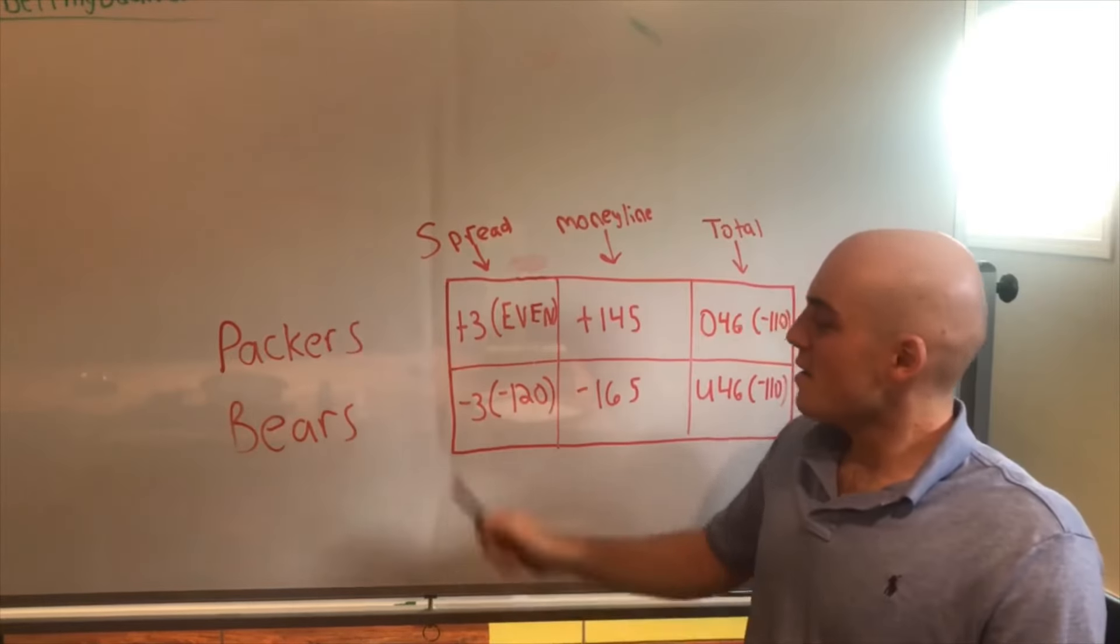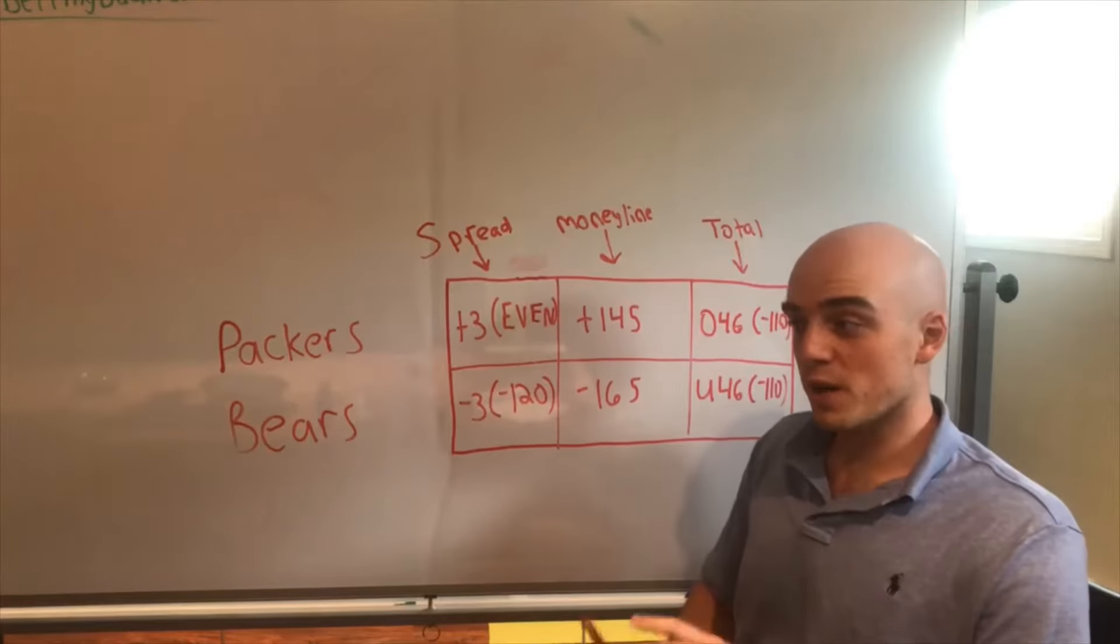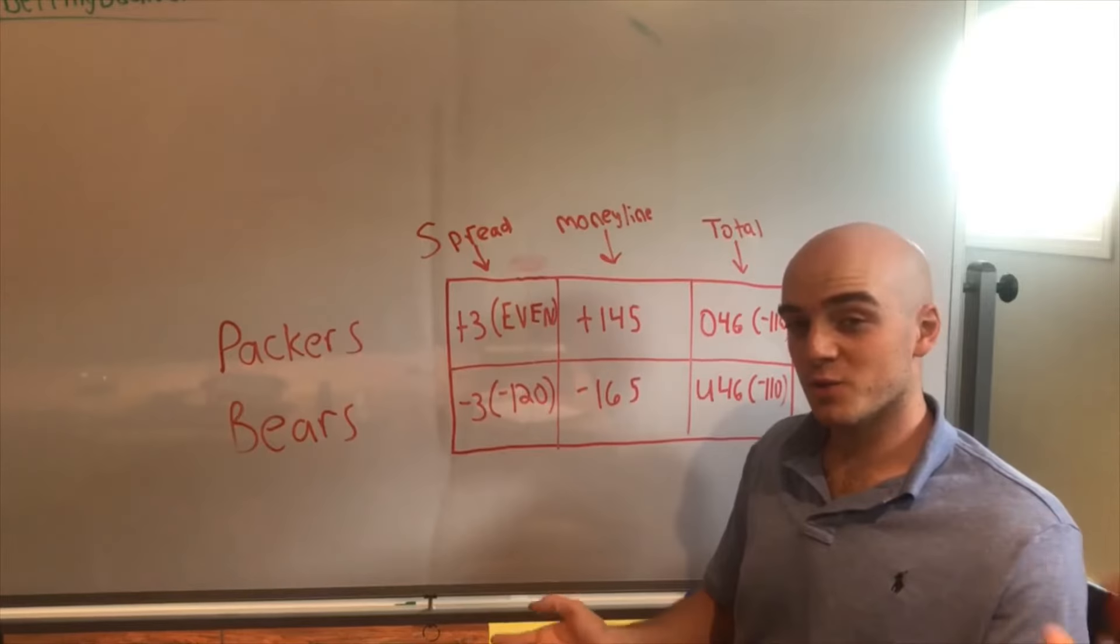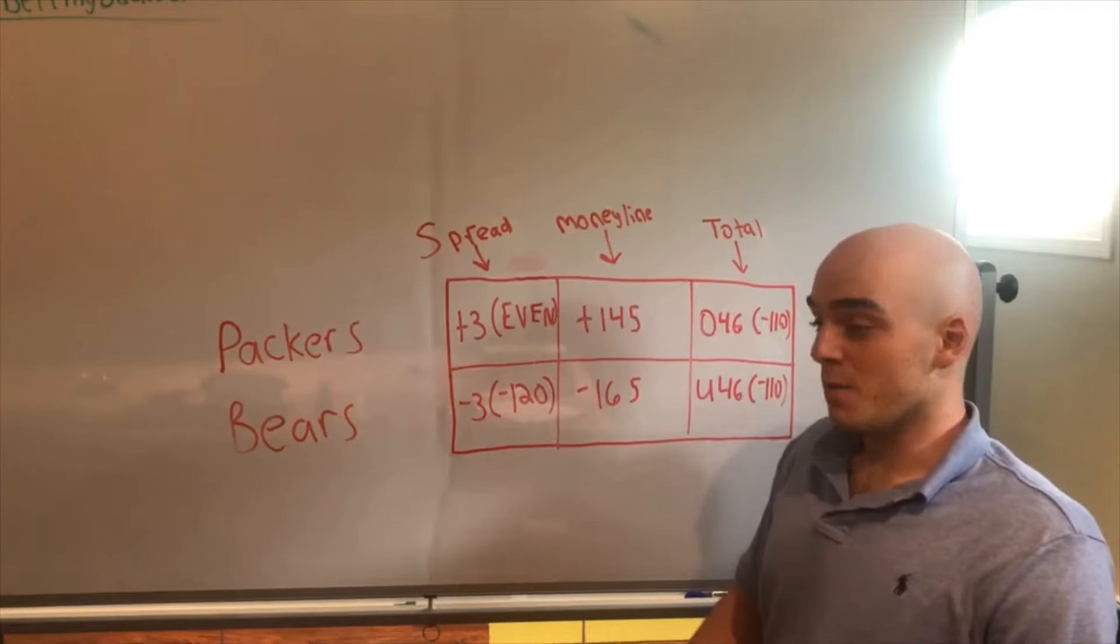Now you add three to that 22 - that's 25. 25 is greater than 24, you end up winning the bet despite the fact that the Packers lost the game.